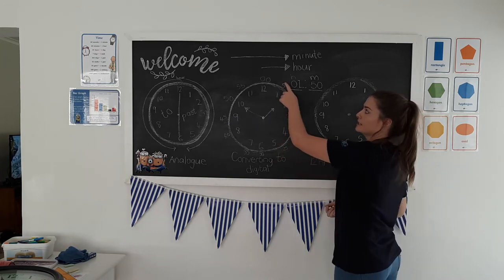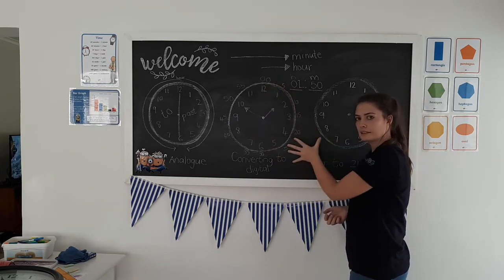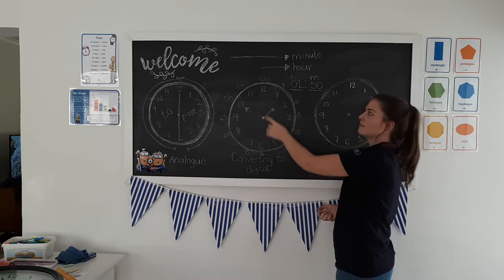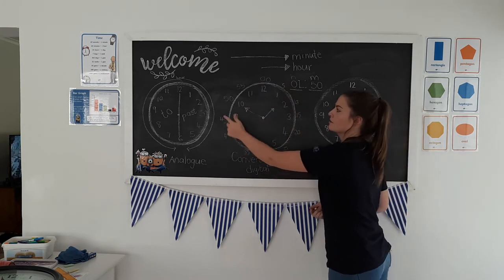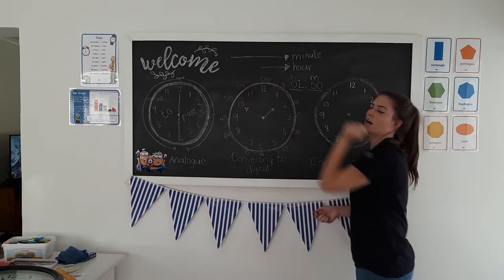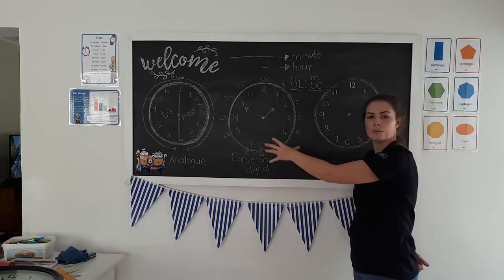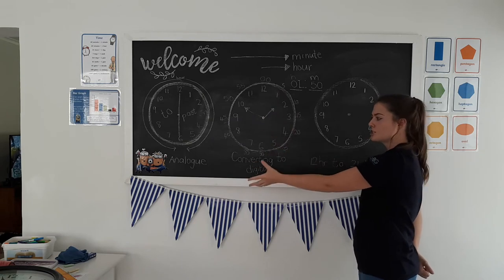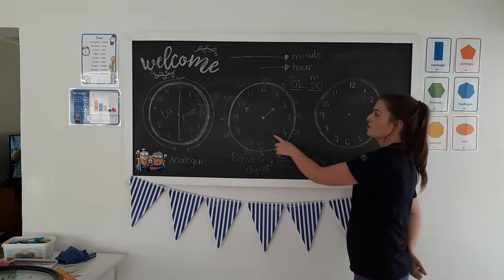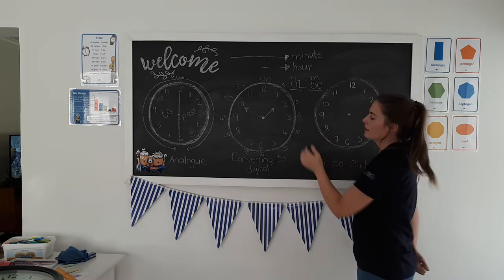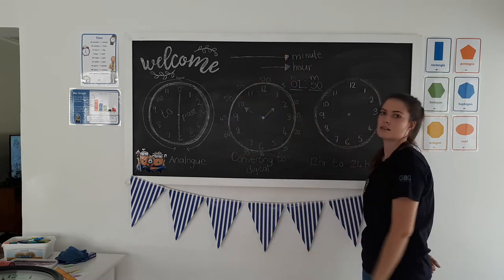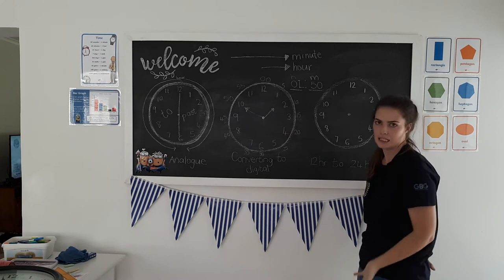That is digital time very briefly. If you're struggling, draw a clock face and fill in five, ten, fifteen, twenty, twenty-five, thirty, thirty-five, forty, forty-five, fifty, fifty-five, hour. The only tricky part about converting between digital and analog is knowing when to put which hour. If it's to the next hour, it means we are not there yet.